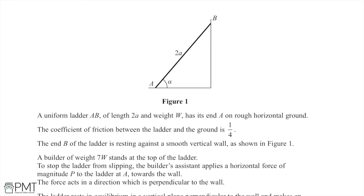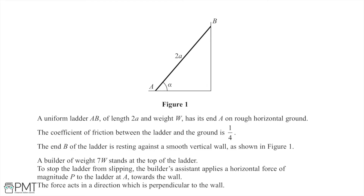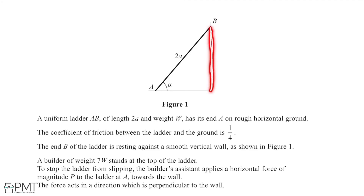In this question we're given quite a lot of information so we're going to work through it slowly. We're told that a uniform ladder of length 2a and weight w has its end A on a rough horizontal ground. The coefficient of friction between the ladder and the ground is 1/4, and end B of the ladder is resting against a smooth vertical wall.